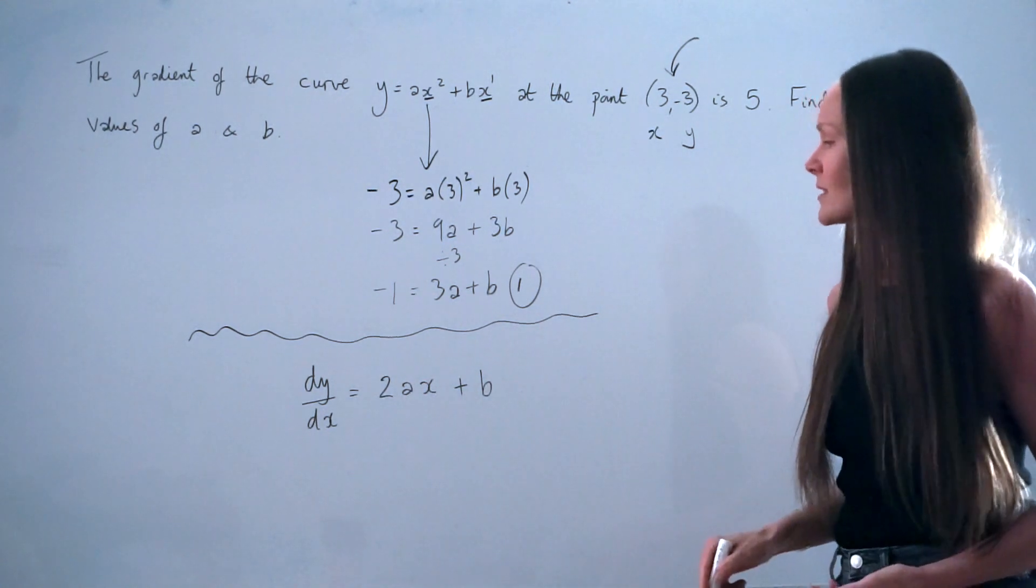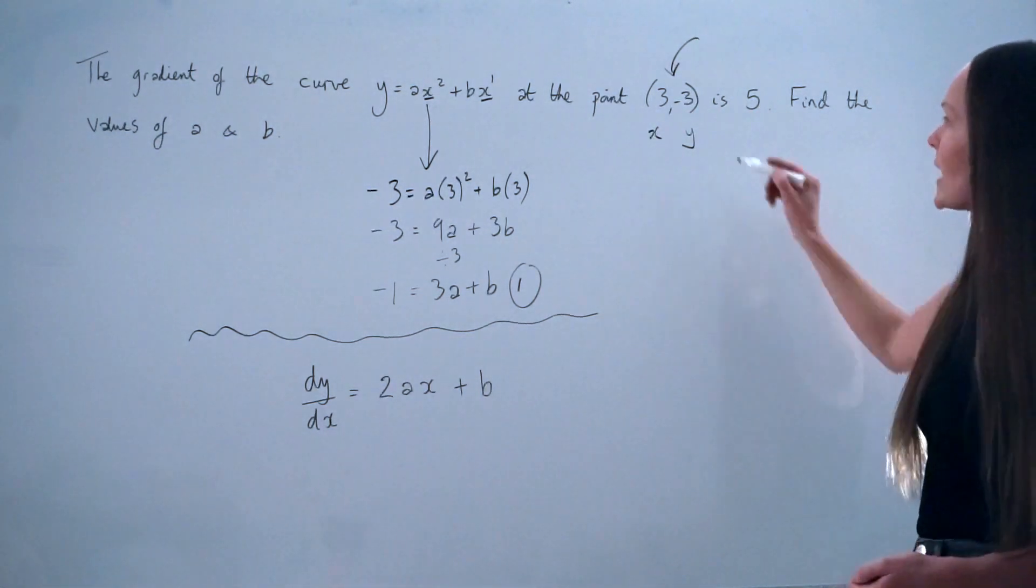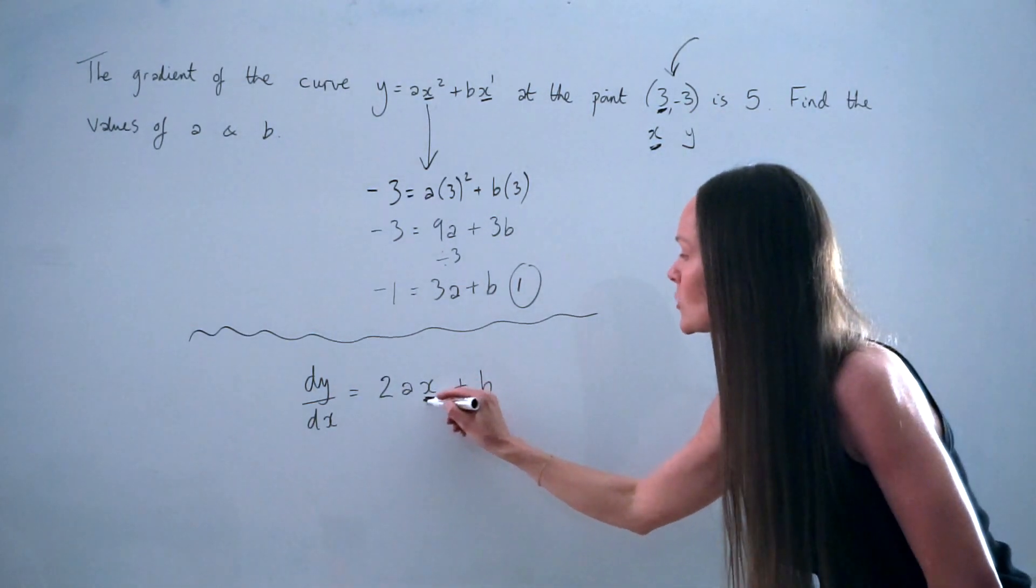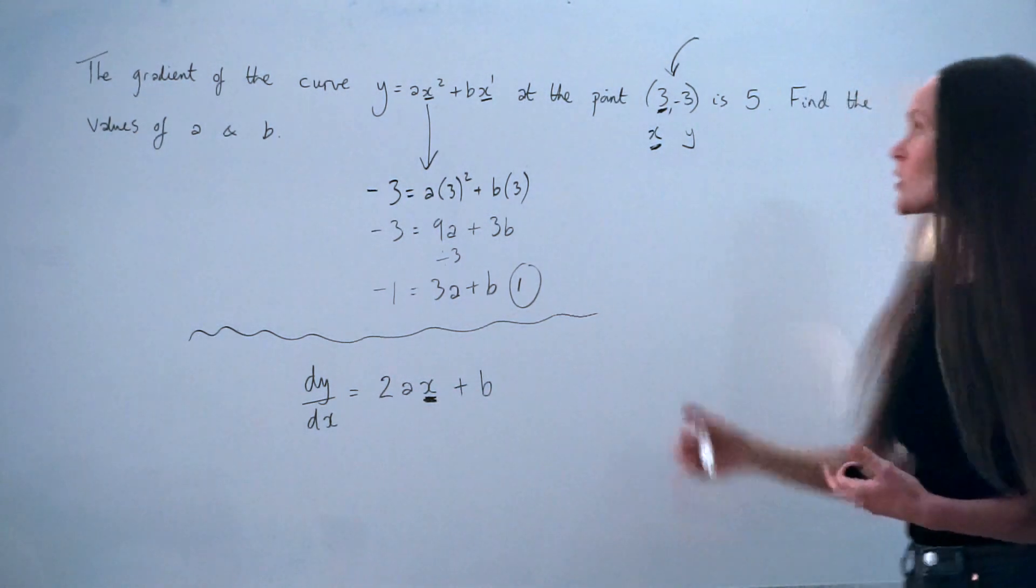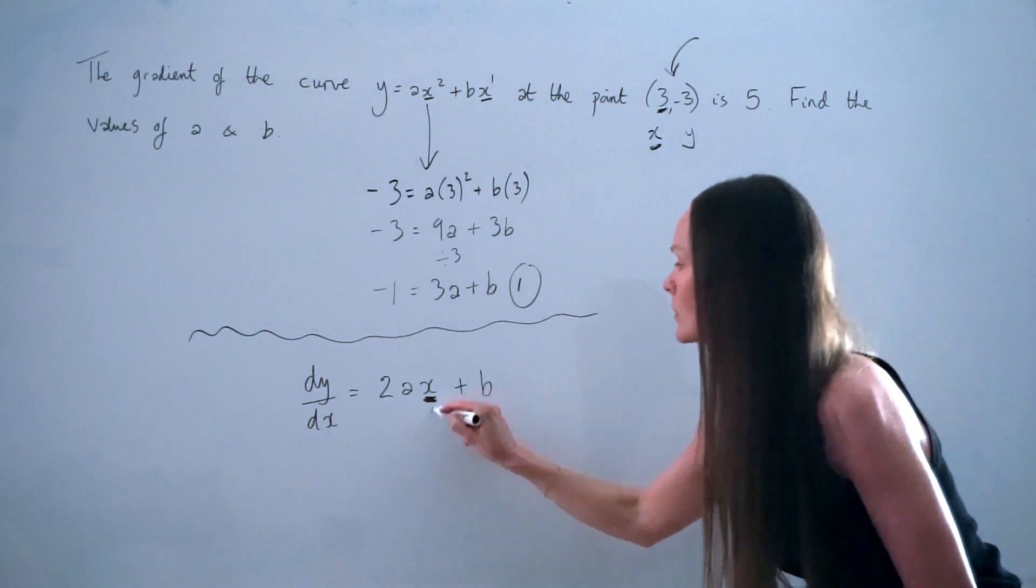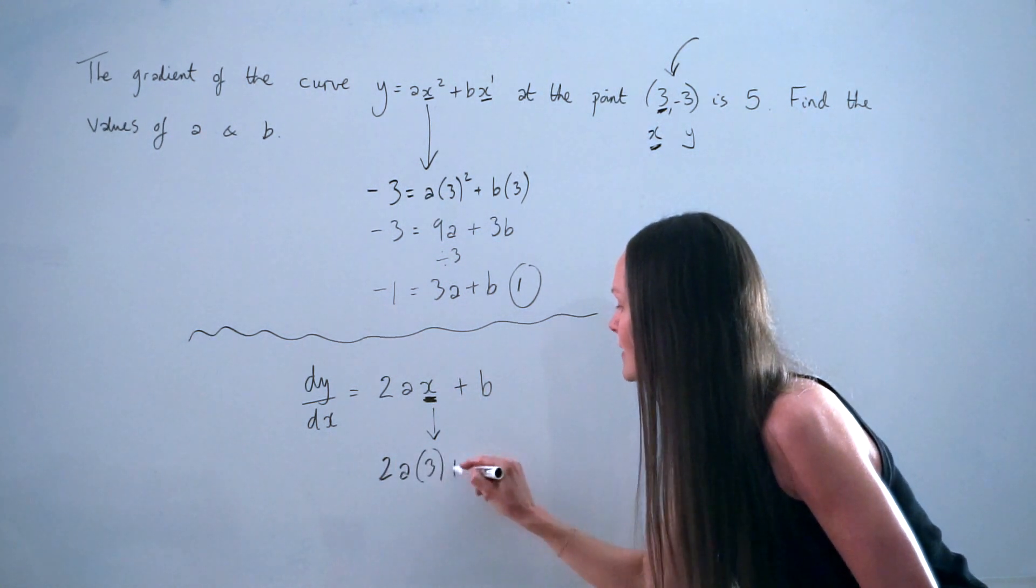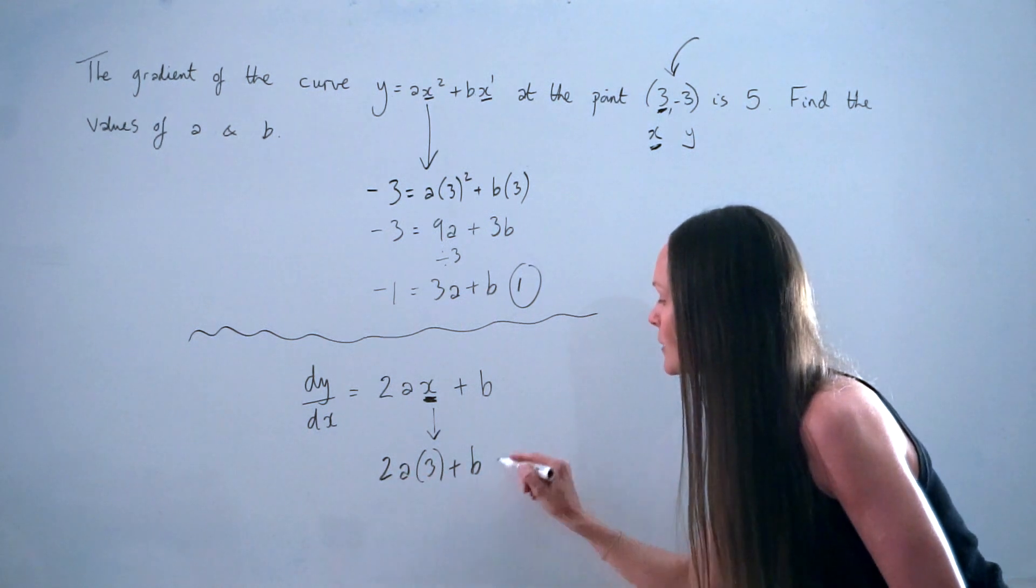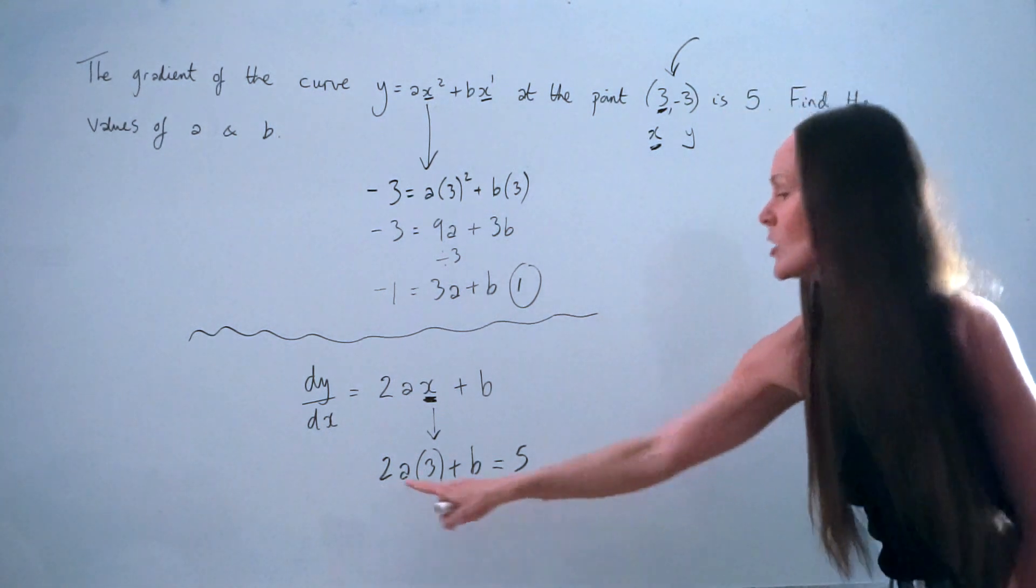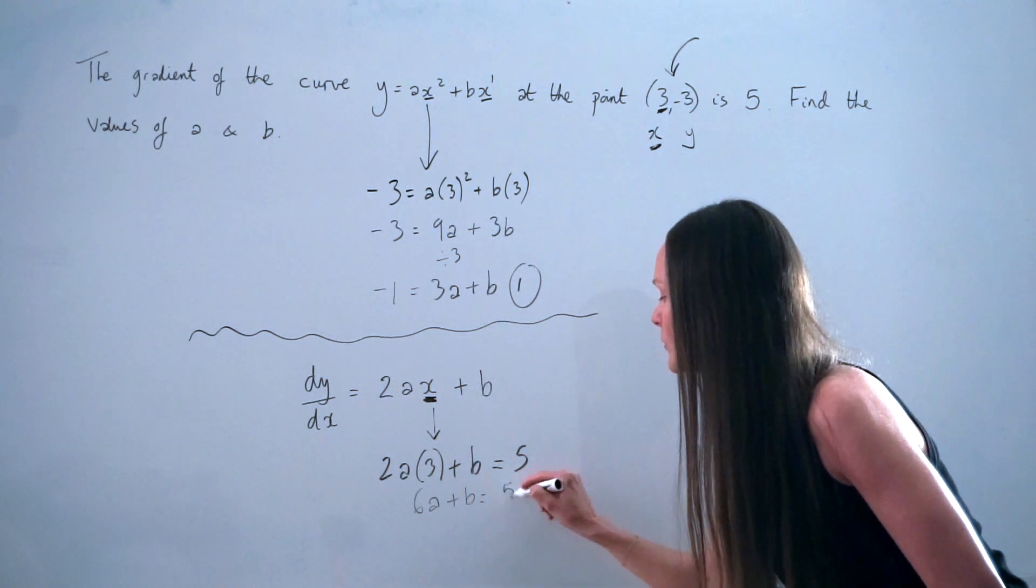Now, this gradient is equal to 5 at that point (3, -3). So you need to take your value of x, positive 3, and substitute it into your expression here, and then put the expression equal to 5, as that is the gradient when x is positive 3. So, substitute positive 3 in place of x, and the whole expression is equal to 5. And now I'm just going to simplify this. So 2a times 3 is 6a. So 6a plus b is equal to 5.